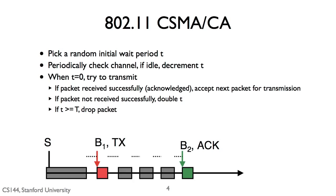So the basic approach is that you pick an initial wait period, T. This often starts off as being very small. And what the transmitter does is it periodically checks the channel. If the channel is idle, on one of those checks, it decrements T. So it's counting down T. So T represents the amount of idle time the transmitter wants to hear before it'll transmit. So when T reaches zero, it tries to transmit.